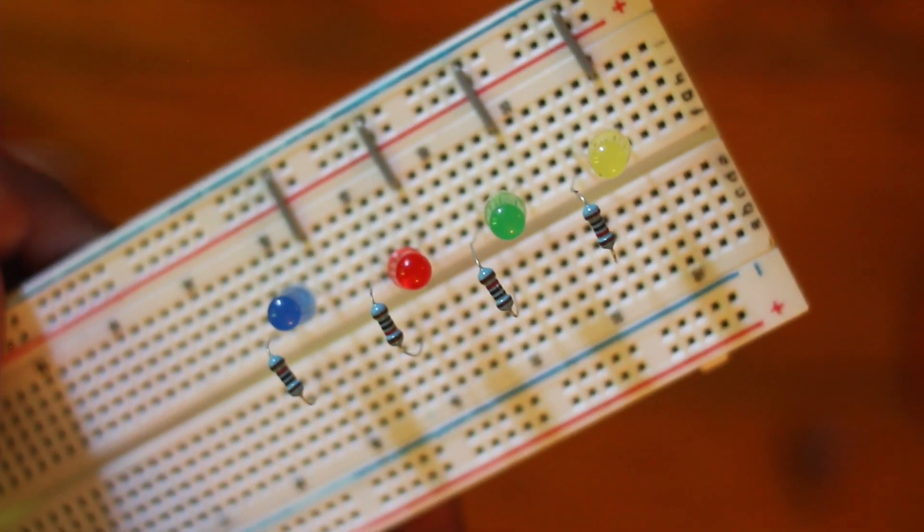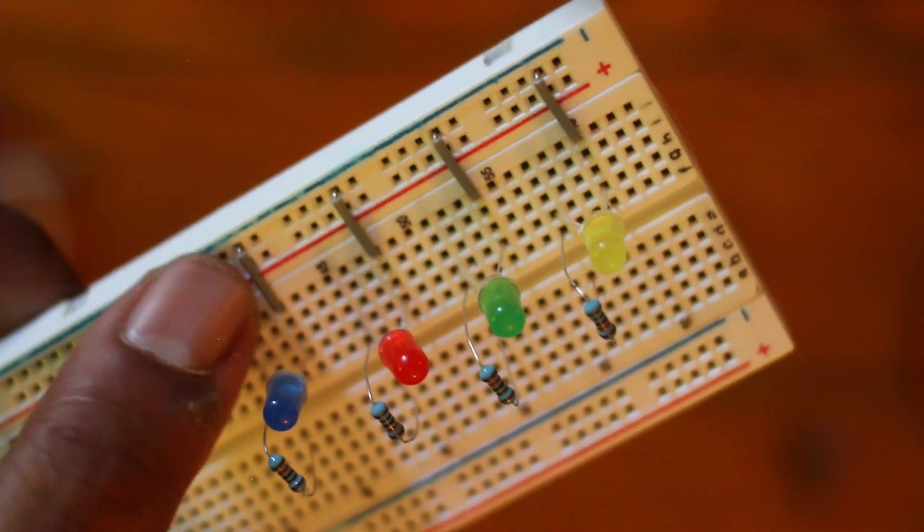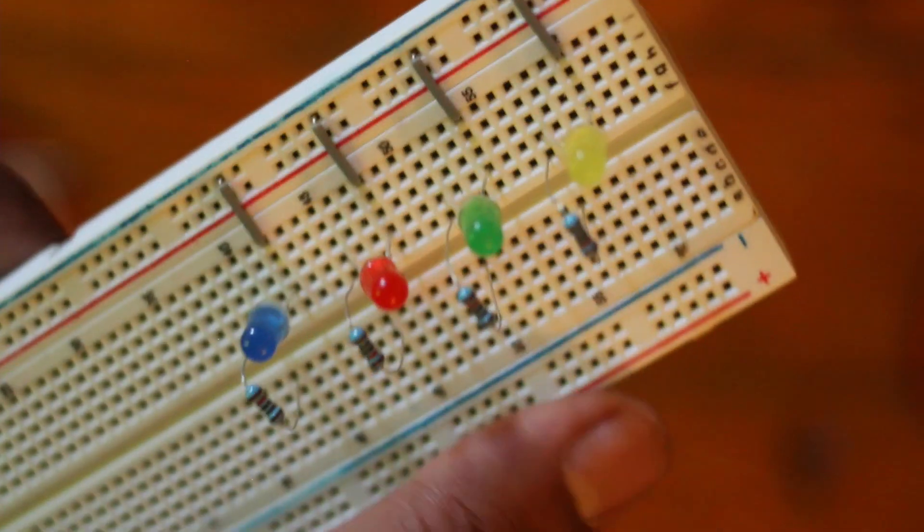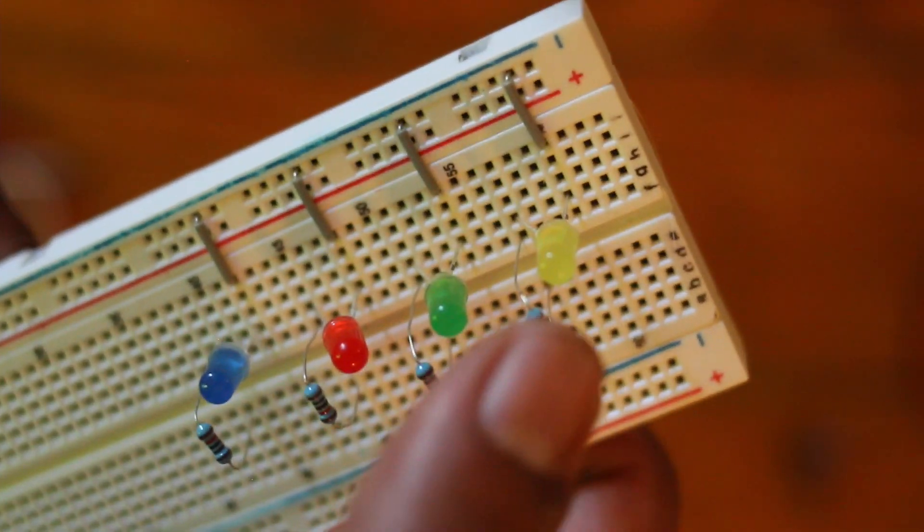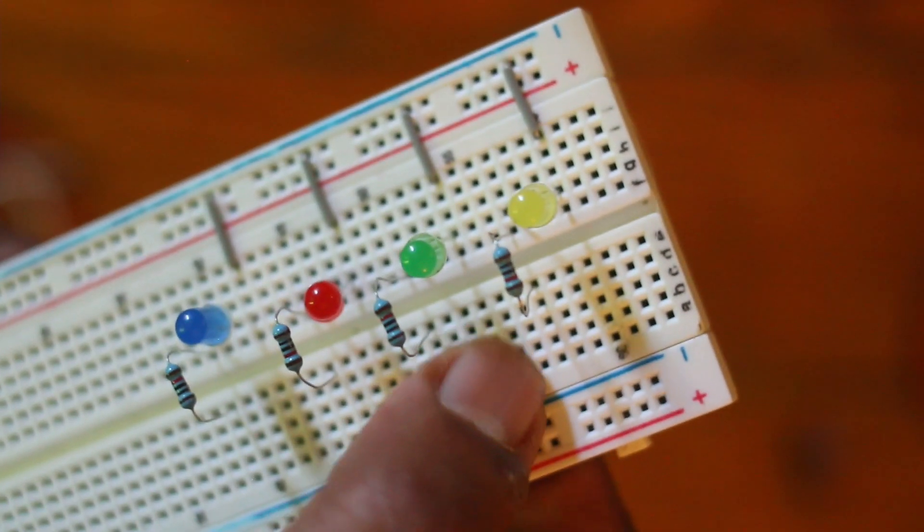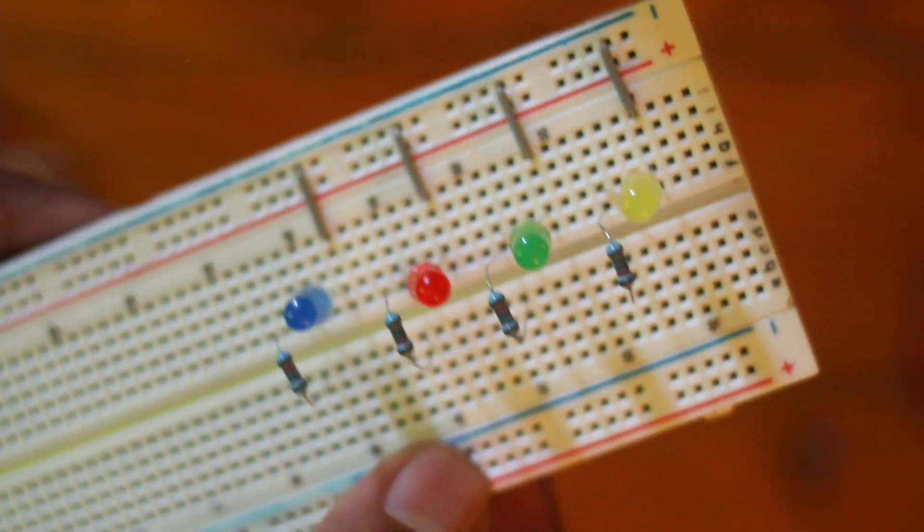So if you can kind of see what I've got going on here, I have the negative rail and each negative of each LED, and I have these 10k resistors going into the other side of the breadboard here.